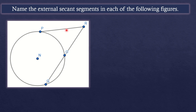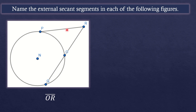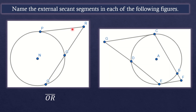In the next figure, one of the lines is a tangent, not a secant. Therefore, the only external secant segment is line segment PR — the other line is tangent to the circle.